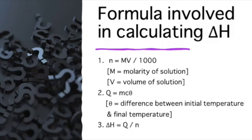There are three formulas involved in calculating delta H. Number one: moles = MV ÷ 1000. Number two: Q (heat change) = mcΔT. And number three: ΔH = Q ÷ n, which is the heat of reaction.